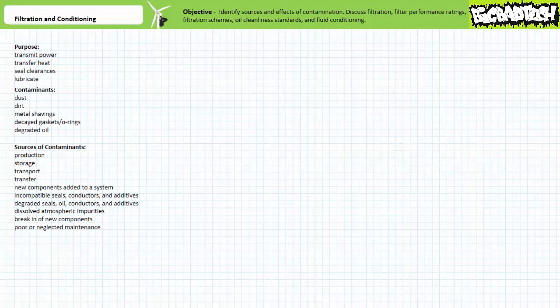Sources of contaminants include production, storage, transport, transfer, new components added to a system, incompatible seals, conductors, and additives, degraded seals, oils, conductors, and additives, dissolved atmospheric impurities, break-in of new components as manufacturer tolerances are worn away, and poor, neglected maintenance.